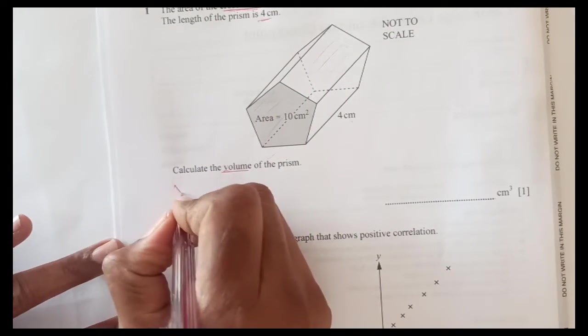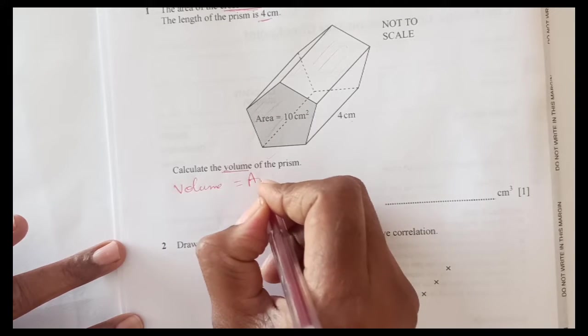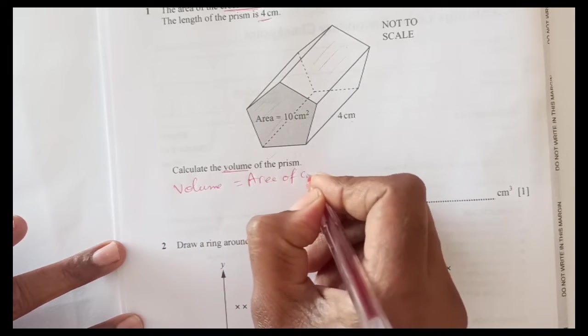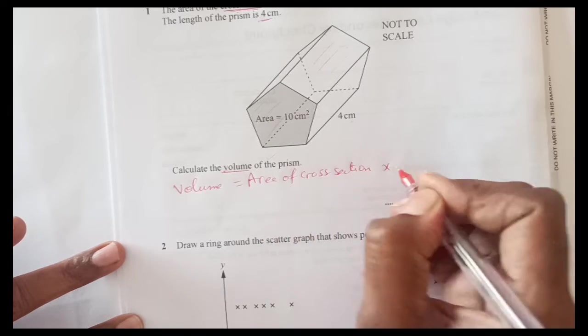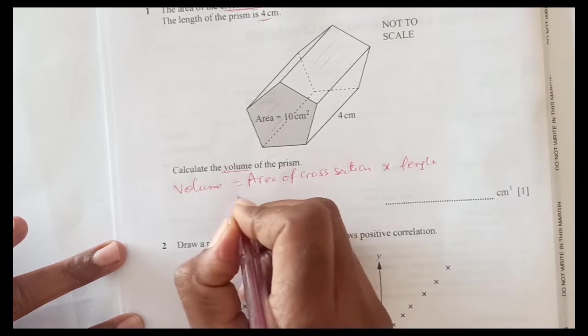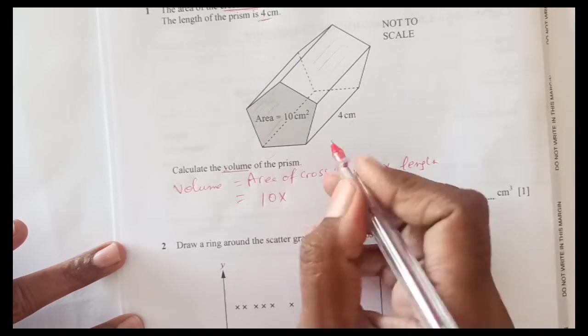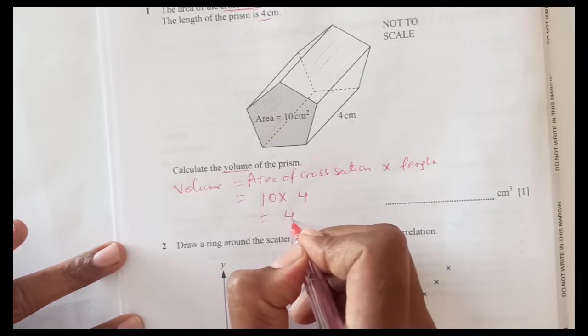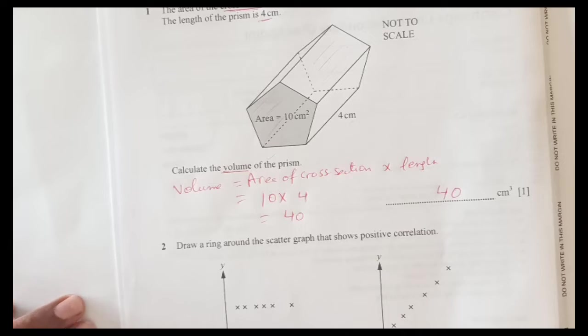Volume of the prism, we have the formula: volume of prism is area of cross section times the length. This is the formula. Area of cross section we are given 10 and length is 4, so 10 times 4 is 40. So 40 centimetre cubed is the final answer.